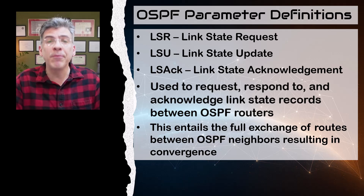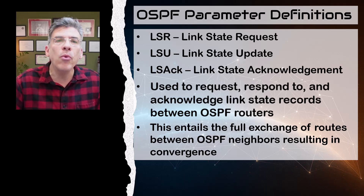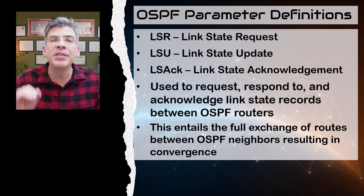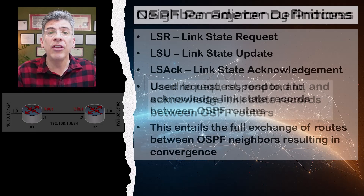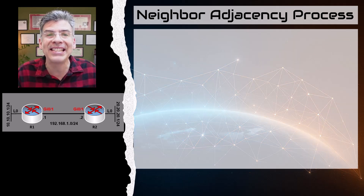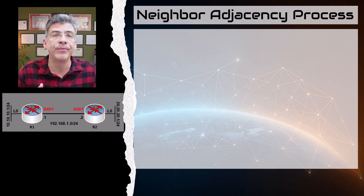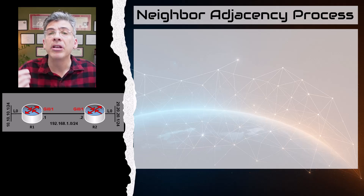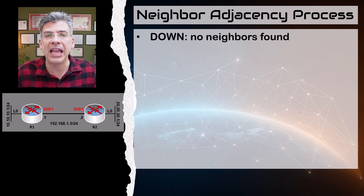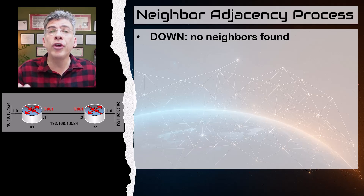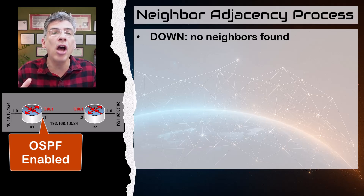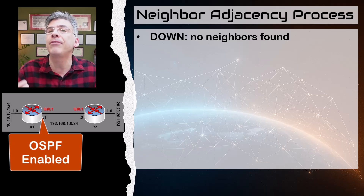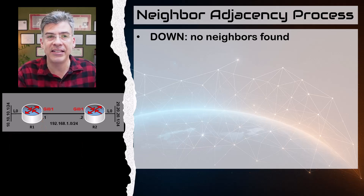Having all of this information under our belt, let's go on and take a look at the OSPF neighbor adjacency process. The neighbor adjacency process has several stages that it goes through, called neighbor states. Specifically, we start off with the down state. In this state, although the interface has been enabled with OSPF, it has not yet found any active OSPF neighbors at this time.